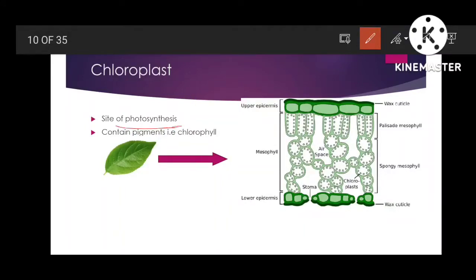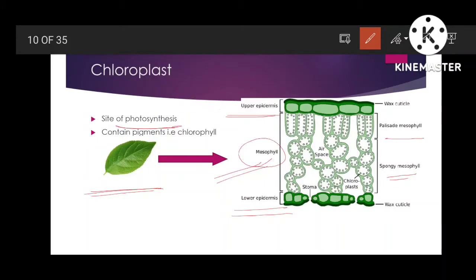In plants, leaves contain cells called mesophyll cells. Mesophyll cells are those cells in which photosynthesis occurs — chloroplasts are present in the mesophyll cells. There are two types of mesophyll cells: palisade mesophyll cells and spongy mesophyll cells. The leaves have an upper epidermis and a lower epidermis, both covered with a wax cuticle that prevents transpiration or excessive evaporation of water.